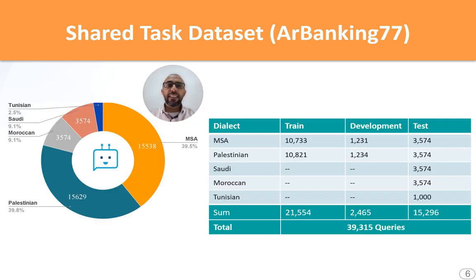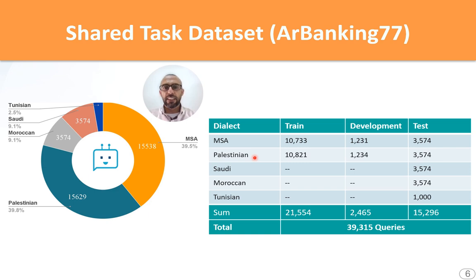The dataset used for this shared task is RBanking77, which consists of around 39,000 queries. We shared with participants the training and development splits for MSA and Palestinian. However, we created all the test data for the evaluation, covering four dialects. The figure shows the distribution of these dialects in the dataset.